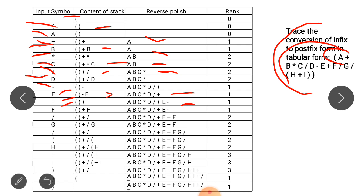Next is F — F is an operand so it will be added to the stack. Then division comes — F's precedence value is less, so division is added to the stack. Next is G — G is an operand and variable, so it is added to the stack. Then division comes again, so elements with higher precedence pop from the stack and are added to the Polish notation.